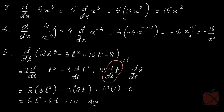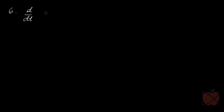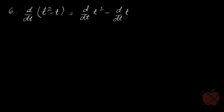Let us do example 6: d/dt of t² - t. This will be d/dt of t² minus d/dt of t, giving 2t - 1.